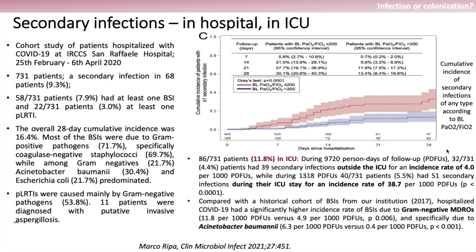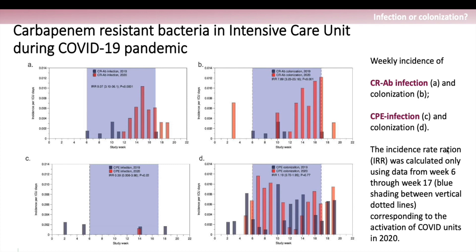Regarding secondary infections in ICUs: a study from February to April 2020 in a cohort of COVID-19 patients included 731 patients and found 68 patients with super-infection — around 8% had bloodstream infection (BSI) and 3% had lower respiratory tract infection. The overall 28-day cumulative mortality was as high as 17% when associated with this disease. Most BSI was due to gram-positive pathogens, specifically coagulase-negative Staph. Carbapenem resistance in ICUs has definitely increased during COVID-19, with rates of carbapenem-resistant organism colonization significantly higher compared to 2019.